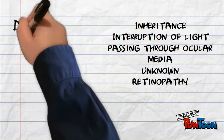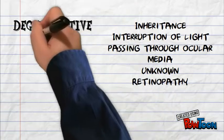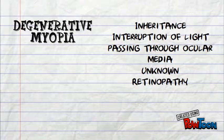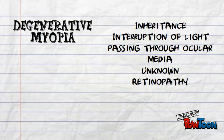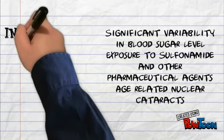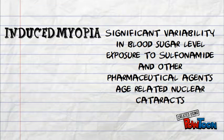Degenerative myopia is one of the types as well. Other causes include inheritance, interruption of light passing through the ocular media, and retinopathy. Induced myopia is due to blood sugar levels and exposure to sulfonamides and other pharmaceutical agents.